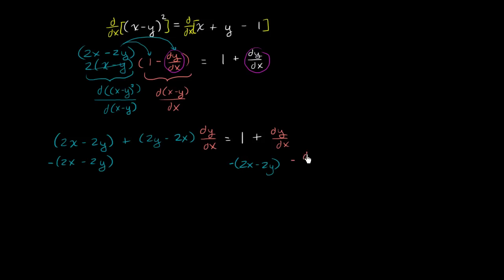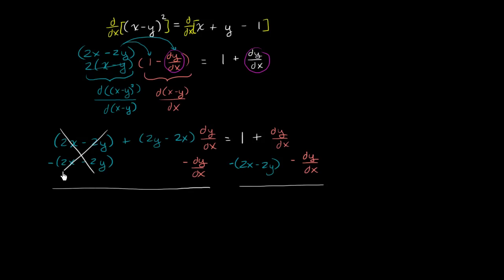We subtract dy/dx on the right and a dy/dx on the left. On the left-hand side the 2x minus 2y terms cancel, and we're left with (2y minus 2x) dy/dx minus 1 dy/dx, which we can write as (2y minus 2x minus 1) times dy/dx.